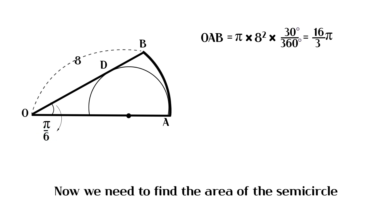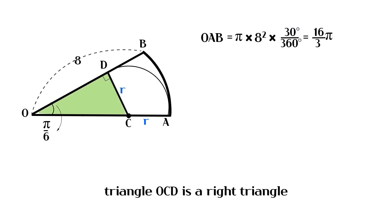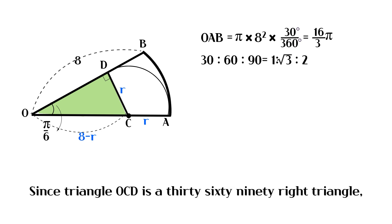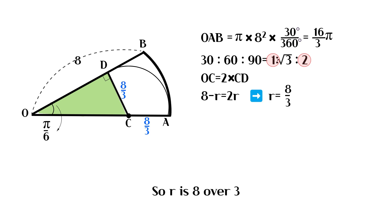Now we need to find the area of the semicircle. If we draw a perpendicular line from center C of the semicircle to OB, triangle OCD is a right triangle, and the length of OC is 8 minus R. Since triangle OCD is a 30-60-90 right triangle, the length of OC is 2 times the length of CD, so R is 8 over 3.